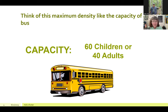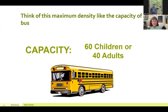I always found it helpful to use this analogy from my graduate school professor: school buses in Connecticut have two capacities written near the door. Let's say this bus had a capacity of 60 children or 40 adults.